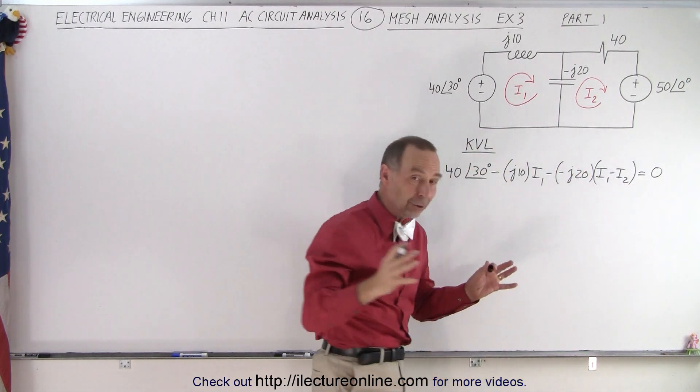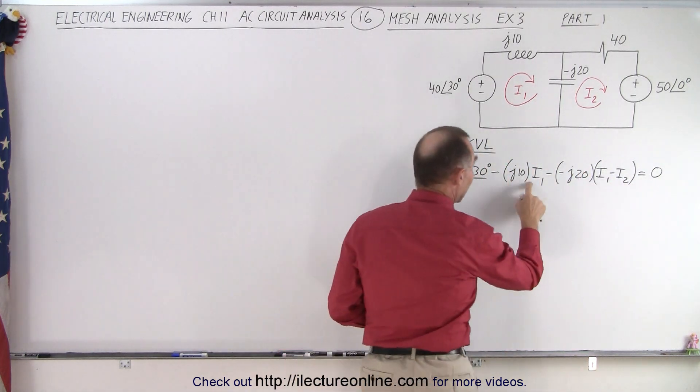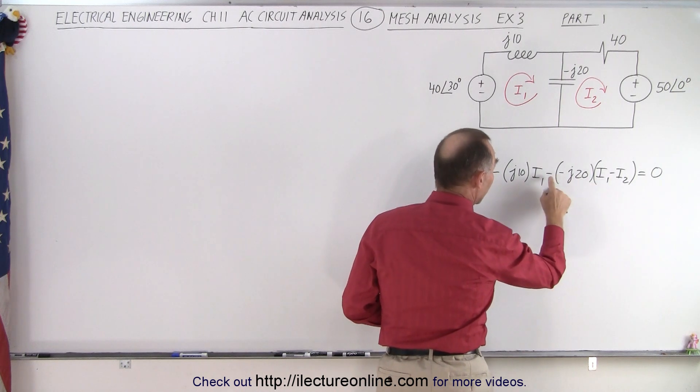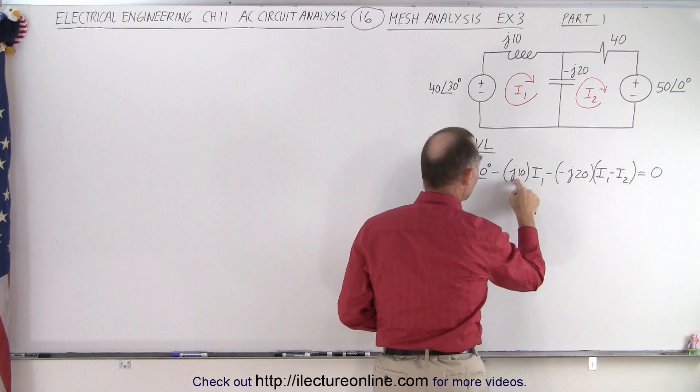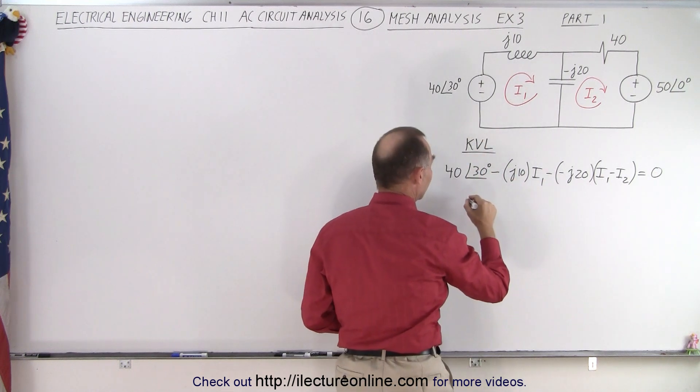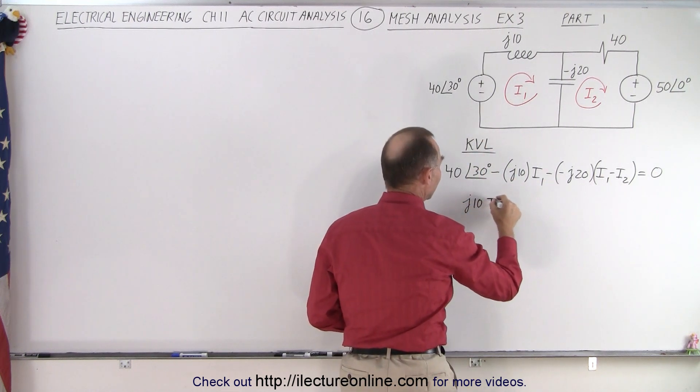Now we combine all the like currents. So we have an I1 here. We have an I1 there. Minus times a minus gives me a plus J20 and a minus J10. That's a plus J10. So J10 times I1.